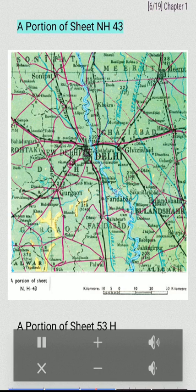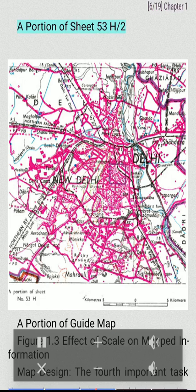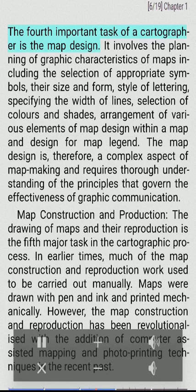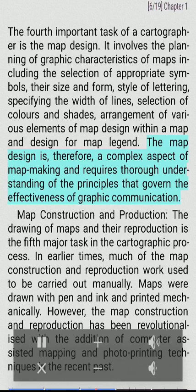Figure 1.3 shows portions of sheets NH43, 53H, and 53H/2, and a guide map, illustrating the effect of scale on mapped information. Map Design. The fourth important task of a cartographer is the map design. It involves the planning of graphic characteristics of maps including the selection of appropriate symbols, their size and form, style of lettering, specifying the width of lines, selection of colors and shades, arrangement of various elements of map design within a map and design for map legend. The map design is therefore a complex aspect of map making and requires thorough understanding of the principles that govern the effectiveness of graphic communication.